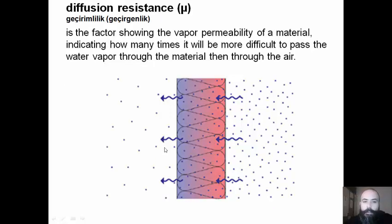Diffusion resistance (μ) is the factor showing the vapor permeability of a material, indicating how many times it will be more difficult to pass the water vapor through the material than through the air.